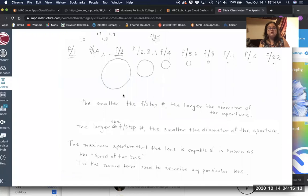The maximum aperture that the lens is capable of is known as the speed of the lens, and that's because it refers a little bit indirectly to the fastest shutter speed that you can make use of with that aperture. And the speed of the lens is the second term that's used to describe any particular lens. So the first term is the focal length of the lens.